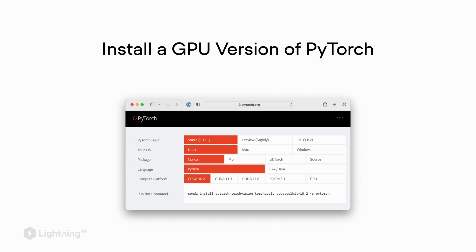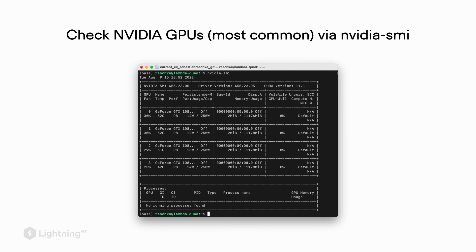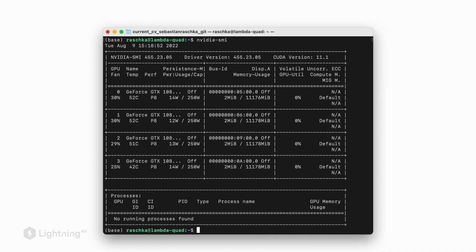If your computer has a GPU and you want to use it, you would have to install the GPU version of PyTorch if you haven't done so yet. I recommend going to the PyTorch.org website and using the installation menu to find out which installation command you need for your operating system and GPU. One way to check whether your computer has an NVIDIA GPU is to run `nvidia-smi` in the terminal, which will show you all the graphics processing units on that computer.